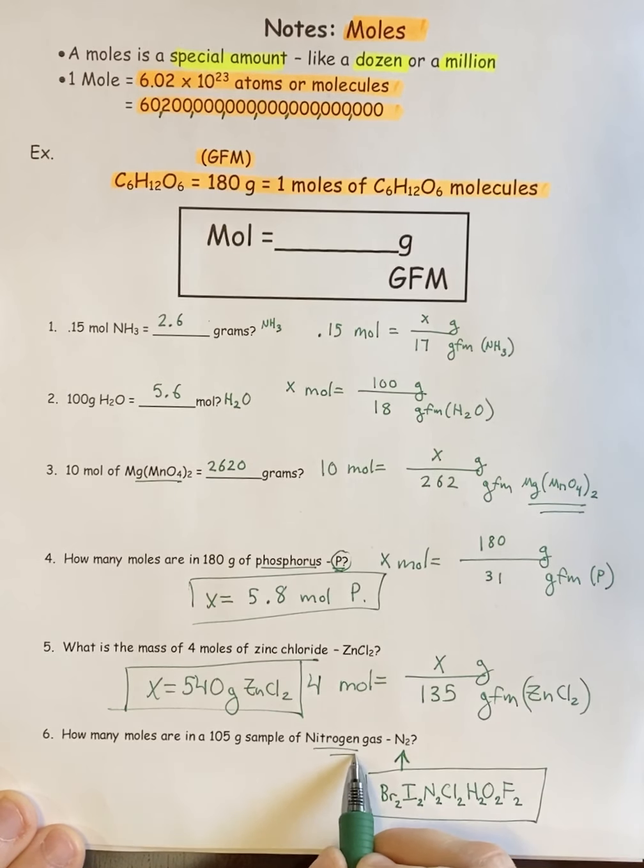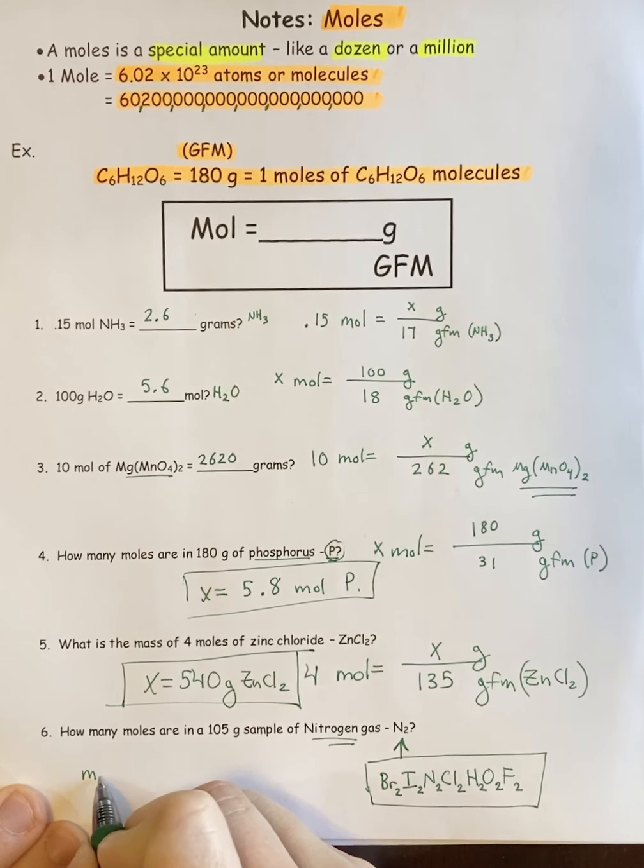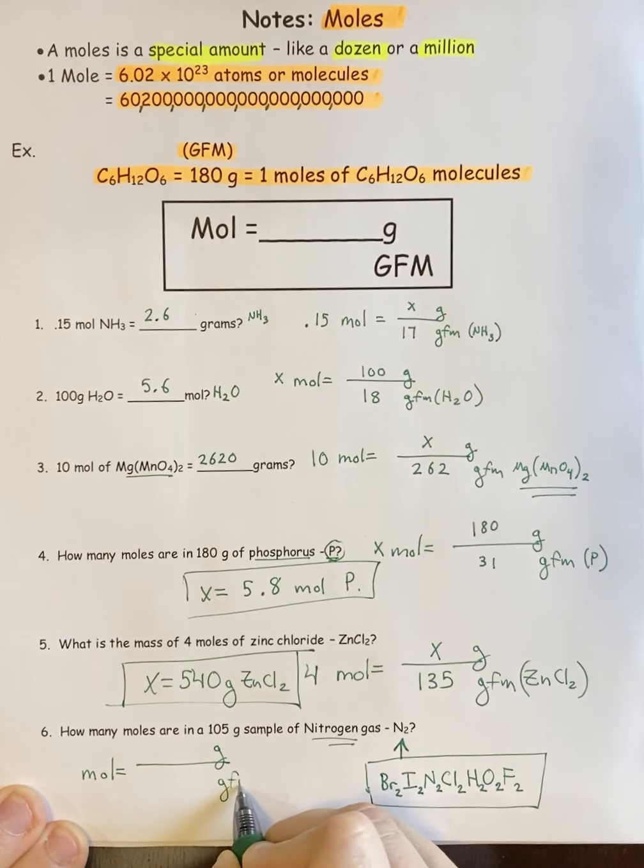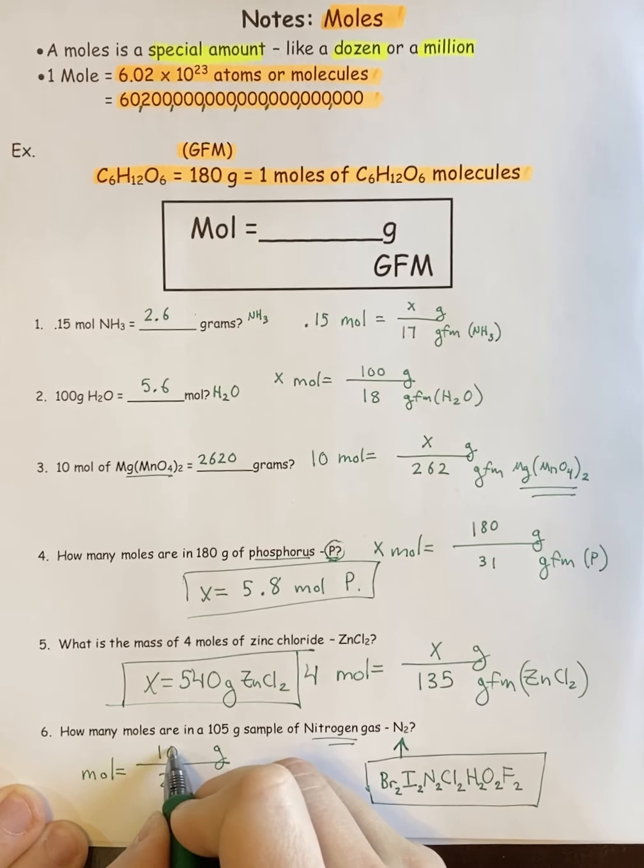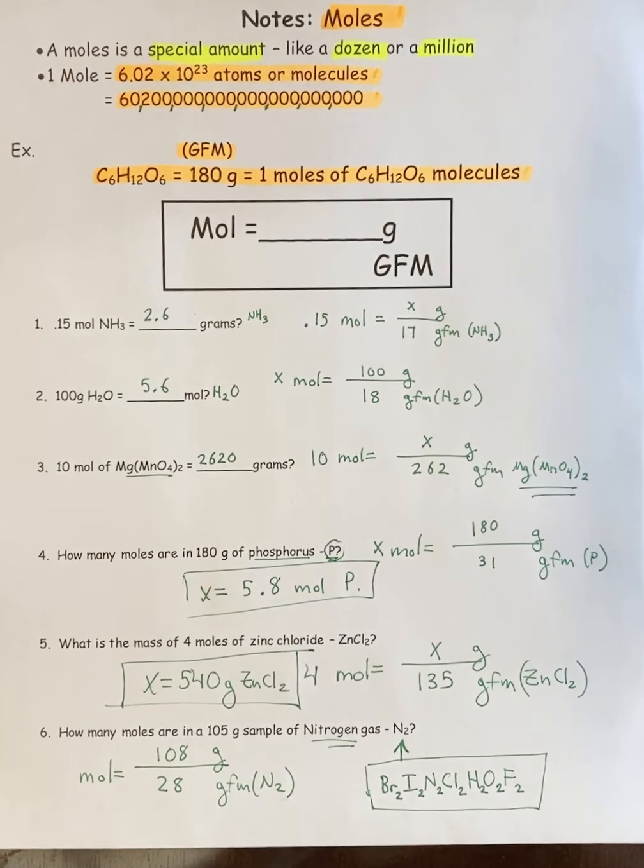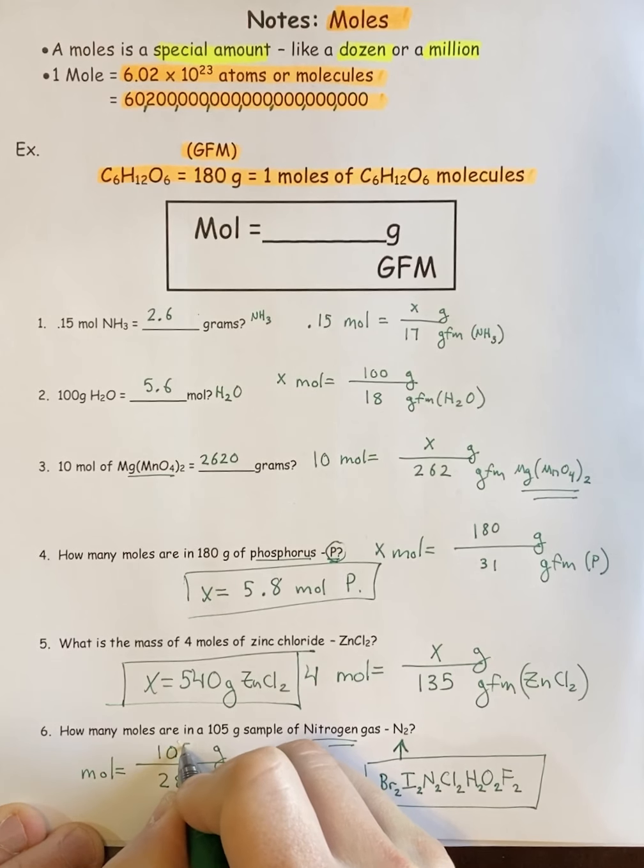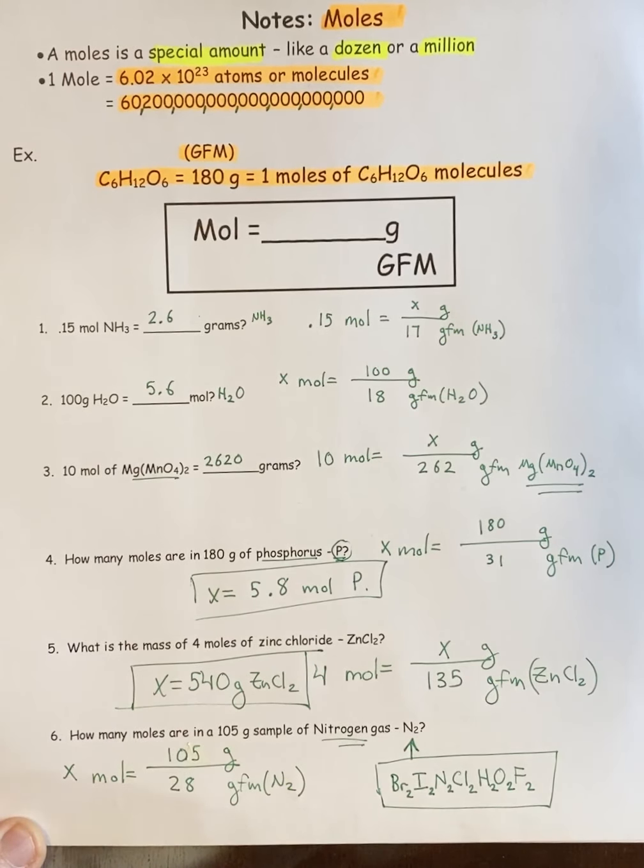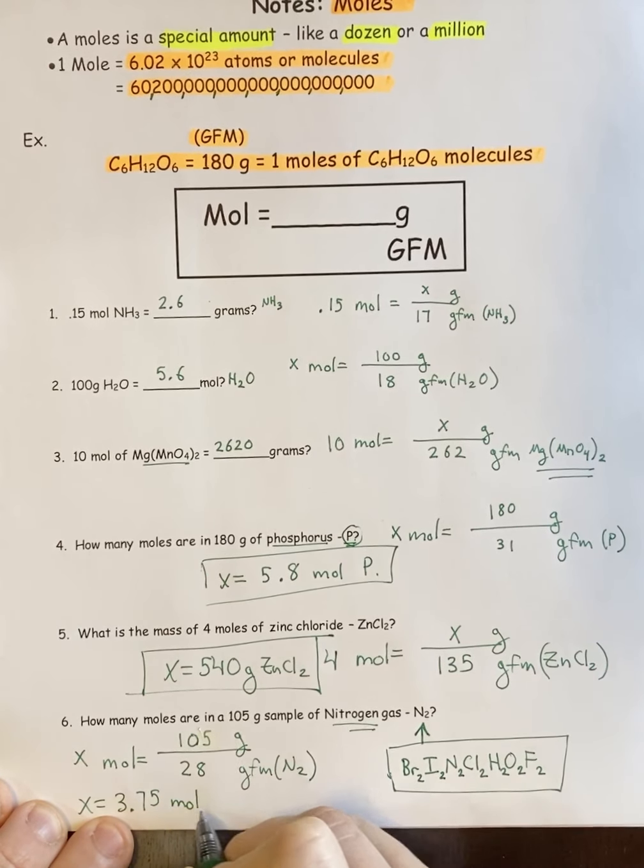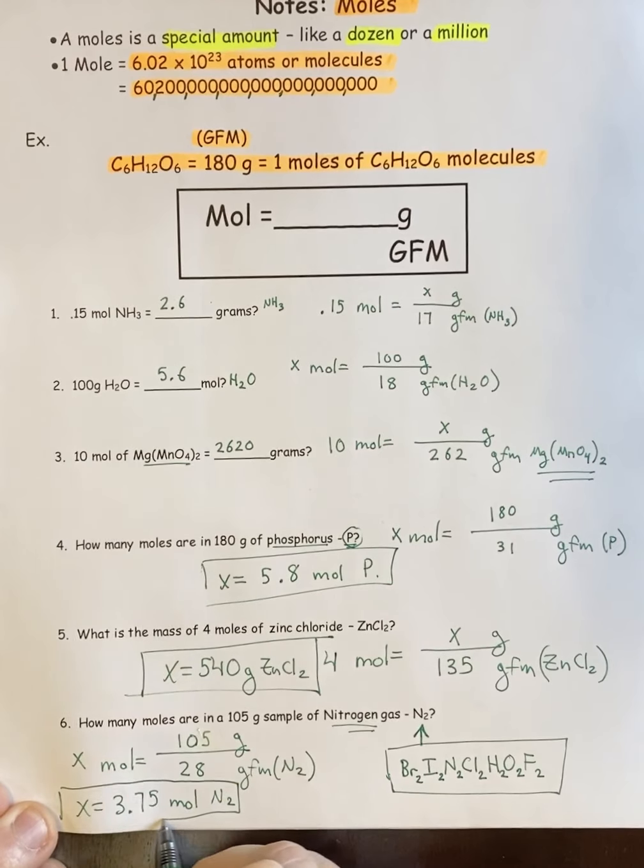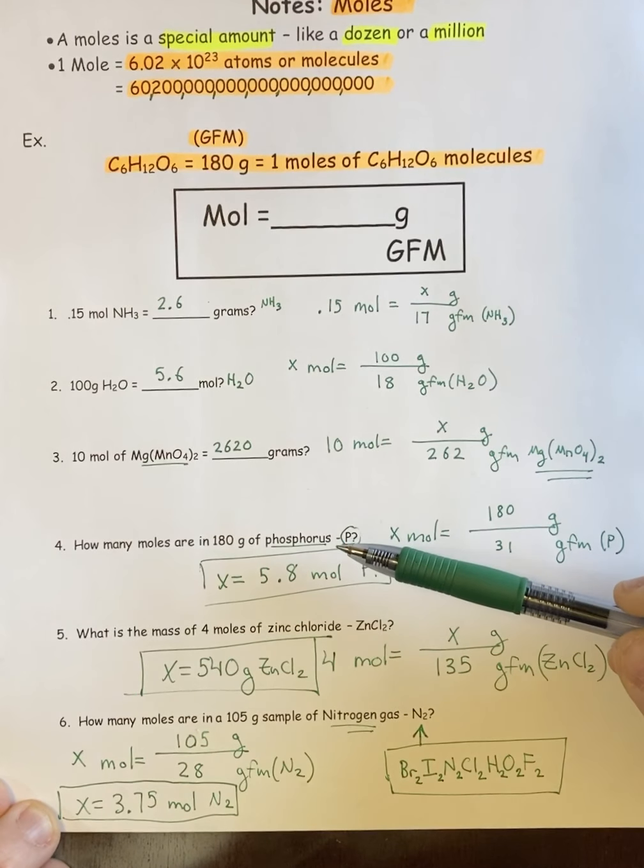For this question, even though they didn't tell you in the name, they just called it nitrogen, they would expect you to know that it was diatomic and that it would in fact be N2. So when we did our formula, they would expect you to know that nitrogen gas is actually N2 and that it weighs 28. 105 is my mass, so for moles I get 3.75 moles of N2.